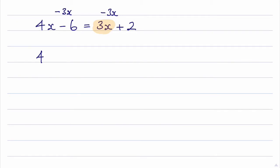So what I have is 4x subtract 3x, I've still got the negative 6, and that is equal to — well the 3x's will cancel, just leaving me with the 2. So 4x minus 3x is just x, and I've got x minus 6 equals 2.